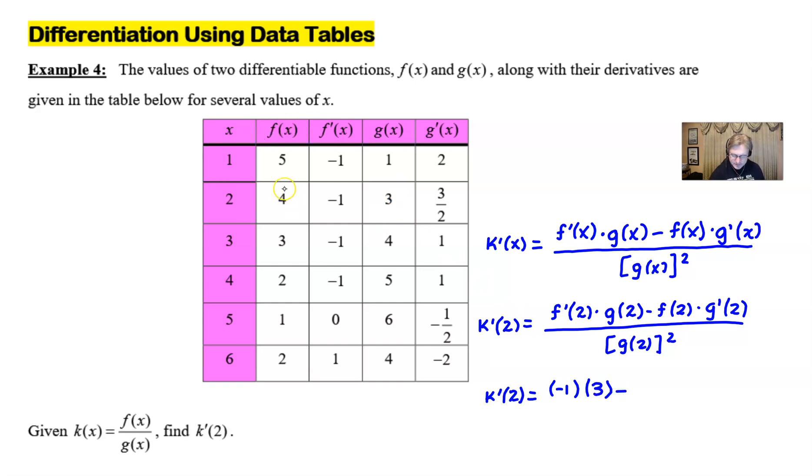Minus our f(2) is going to be a 4. And our g'(2) is going to be a 3 halves. And then the g(2), again, we've already seen that before. 3, we're going to square that, and that's going to be our denominator.